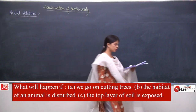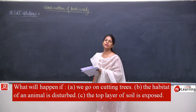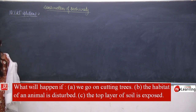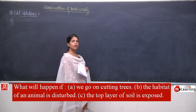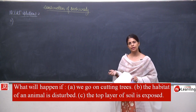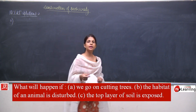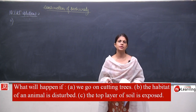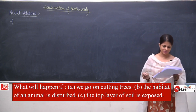Now we will talk about question number 4. What will happen if we go on cutting trees? If we go on cutting trees, the biodiversity will get disturbed. The number of trees will become less, which will definitely affect the animals — their habitat will be destroyed and other things which we have discussed many times already.